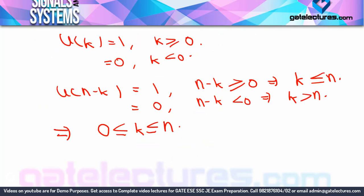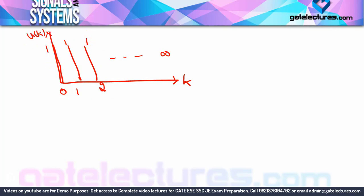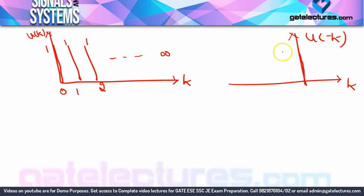So k's range is 0 to N. For this k range, both uk and u(N minus k) are 1, so their multiplication is 1. But your task is not complete yet — we also need to find the range of N, that is where N's value can go. Let me draw uk and u(N minus k). uk is drawn like this: at 0 it's 1, at 1 it's 1, at 2 it's 1, and so on.